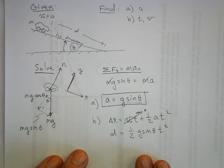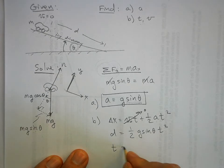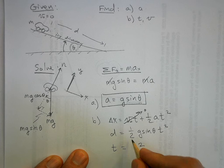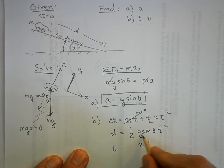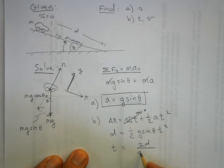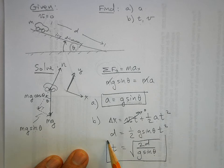Delta x we're calling d, v naught is zero, one half, and then we know the acceleration is g sine theta times t squared. All I need to do now is solve for t. t is equal to two times d divided by g sine theta, where theta is my angle of incline, and then I'll need to take the square root.